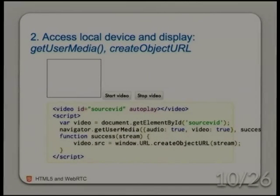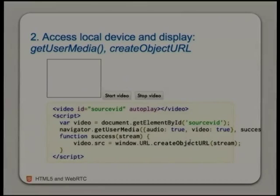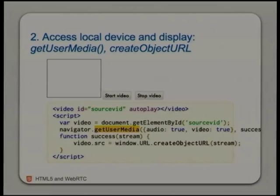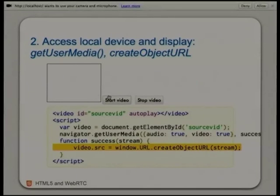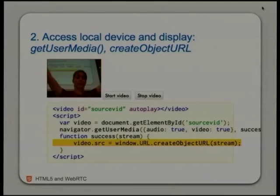The second part is still fairly easy and actually implemented the same across browsers. It's called getUserMedia — this gives you local access to your device. Even that is a really small amount of code. You get your video element by ID in JavaScript, use the getUserMedia function, tell it you want audio and video, and specify what function to call on success. When it succeeds, your video source gets the URL from that stream. I hit start, it asks me to allow access to my camera and microphone, I say allow, and there we go — that's my local webcam.